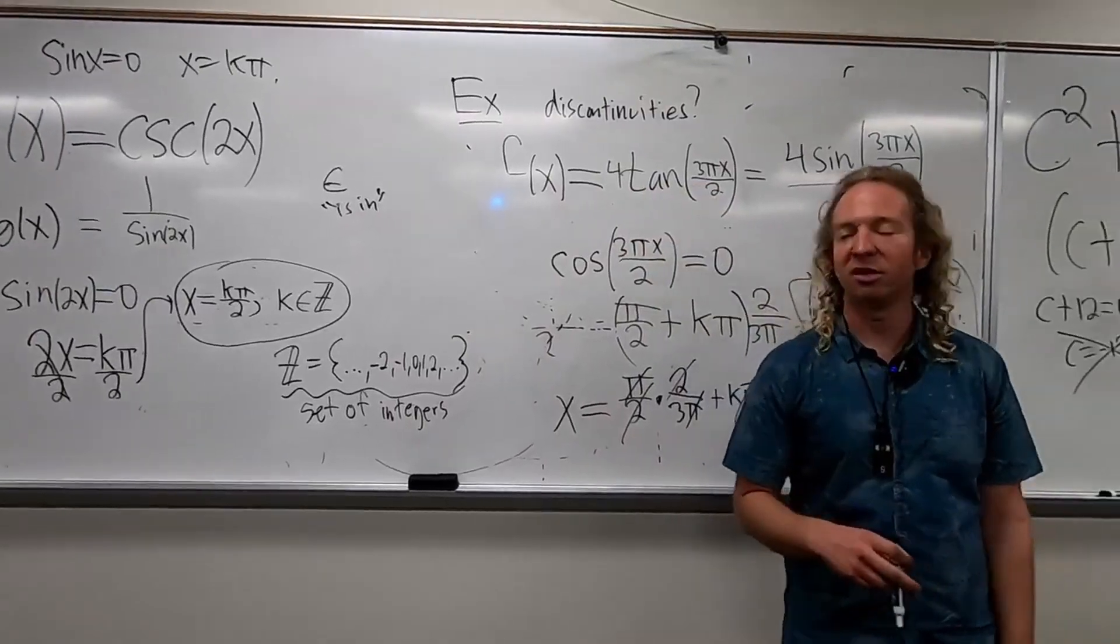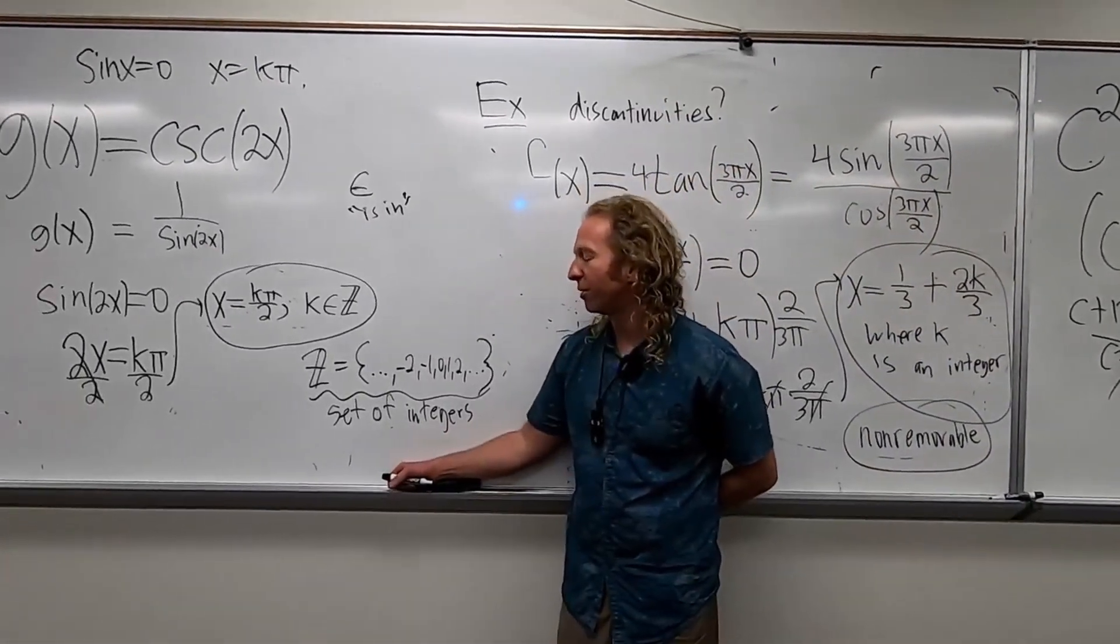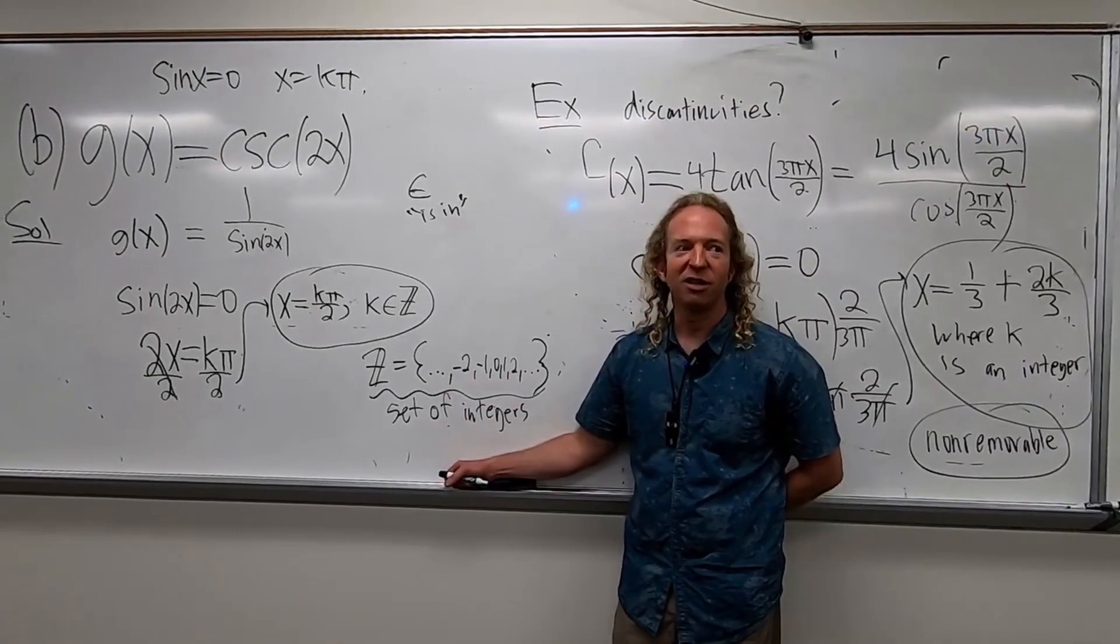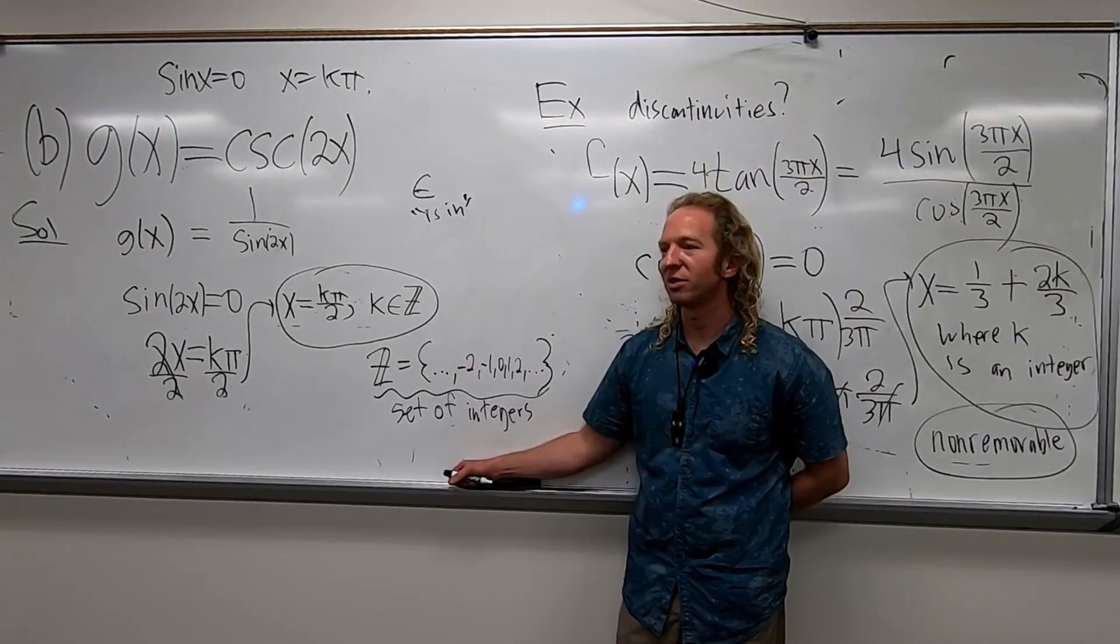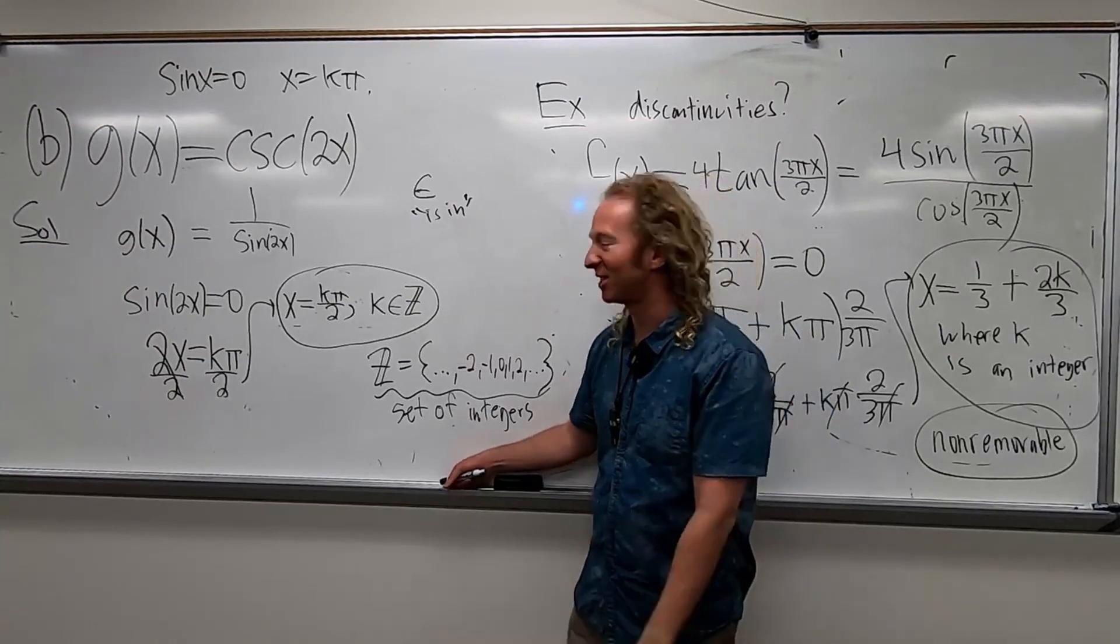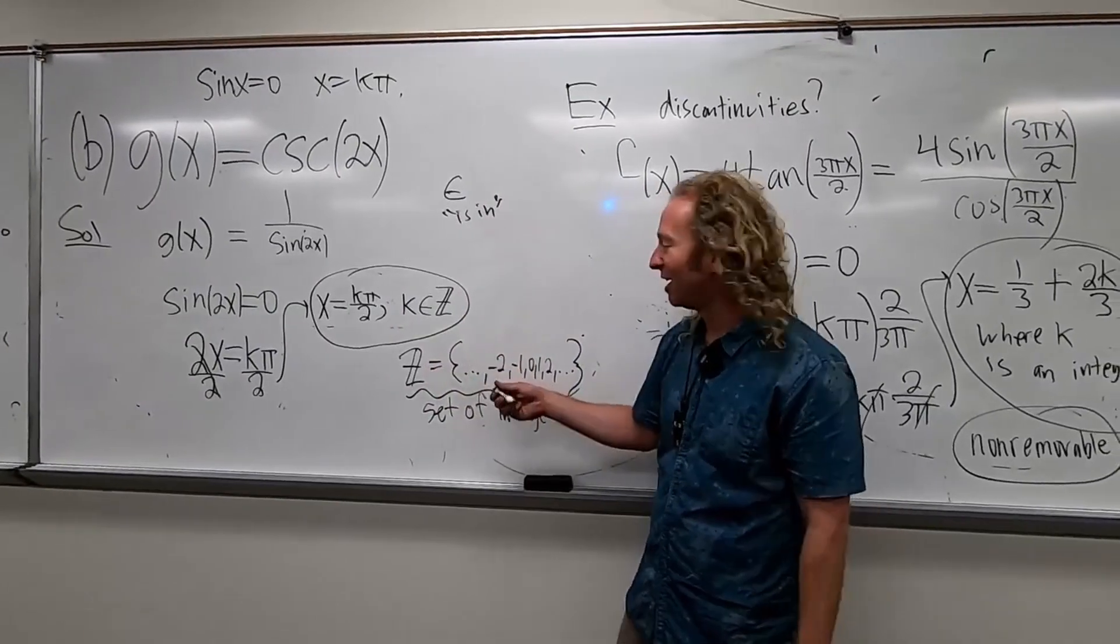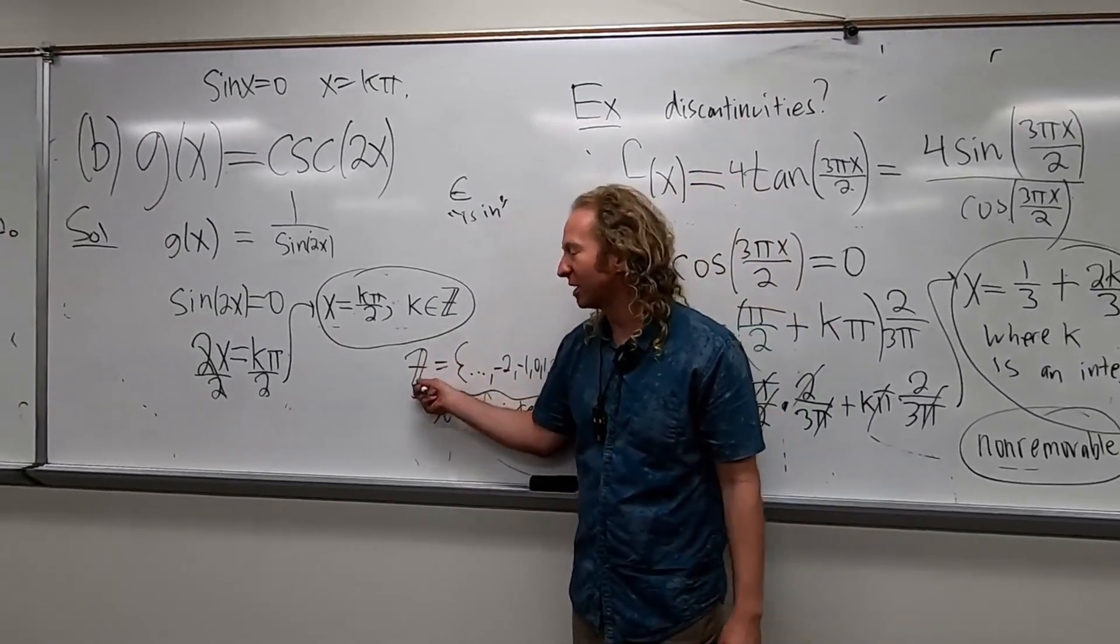The reason that we use the letter z, it comes from German. I don't speak German, but according to Wikipedia, anyone know what the German word for numbers is? Zahlen. That's how you say it. It sounds scary. So Zahlen. Yeah. So that's the German word for numbers.